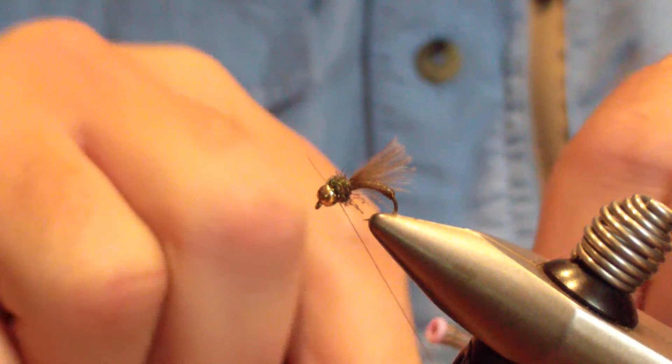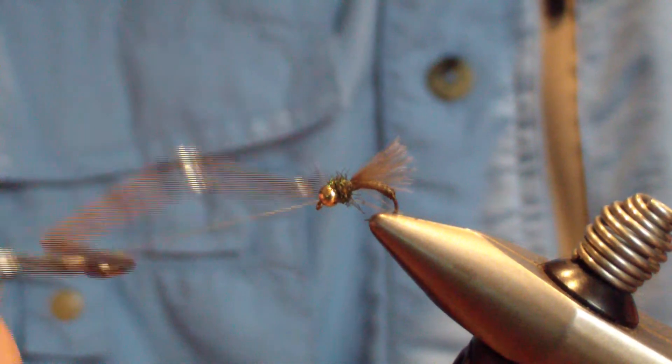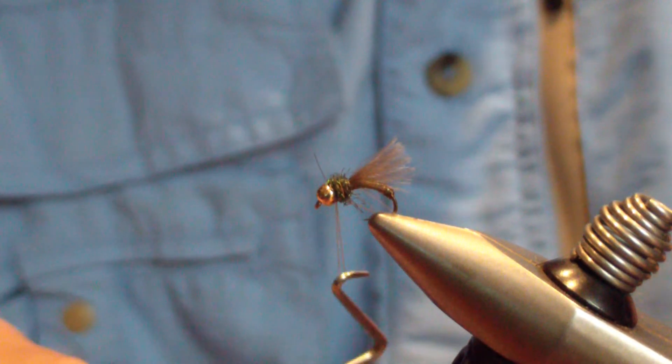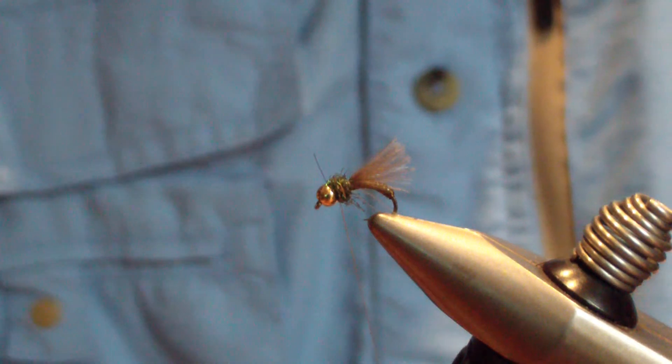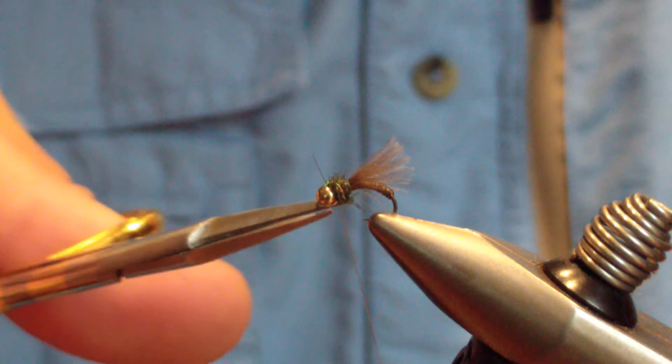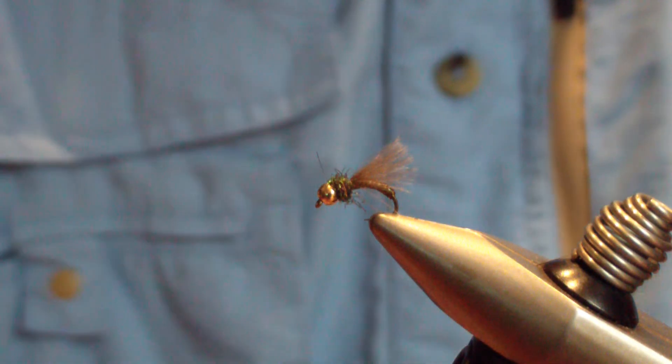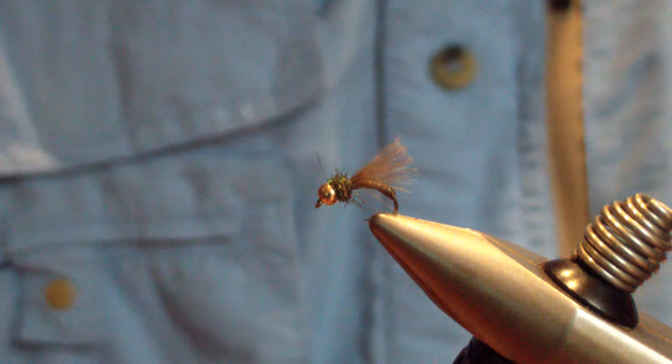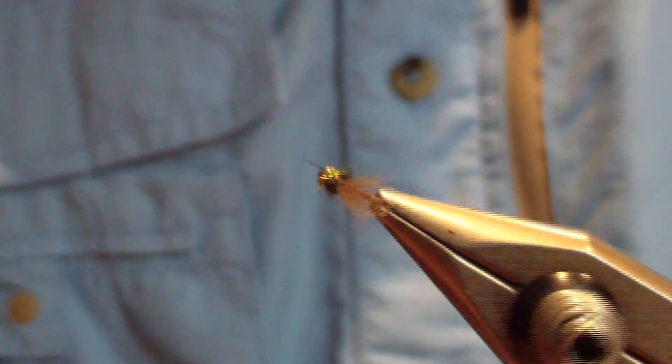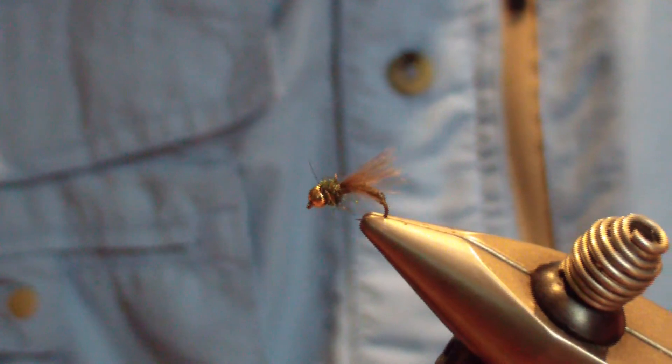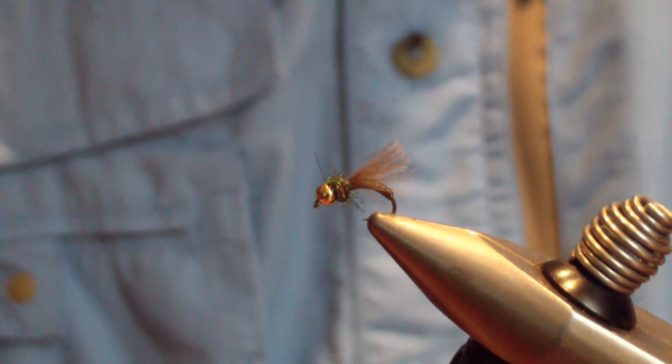Now we're going to whip finish. Like I said, very simple pattern—very easy to replicate and keep stocked. One of my favorite late caddis nymphs for the fall and end of winter. Just does very well for me. The Little Olive Caddis Nymph. Hope it adds to your box as it has mine. Good luck. See you on the water.